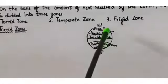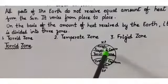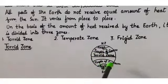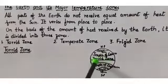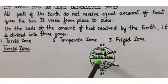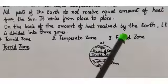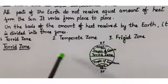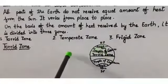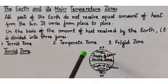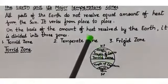The area between the Tropic of Cancer and the Tropic of Capricorn is known as the torrid zone. This zone receives the direct rays of the sun. That is why it is the hottest part of the Earth — also known as the torrid zone and the tropical region.